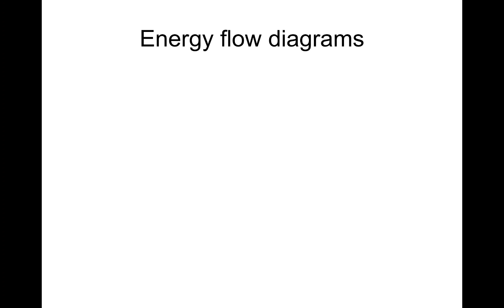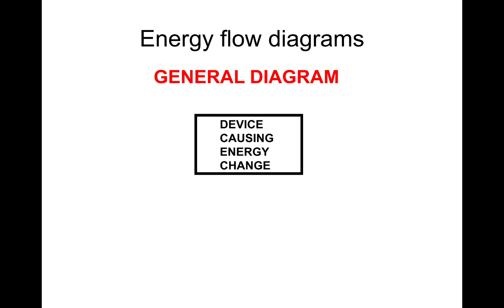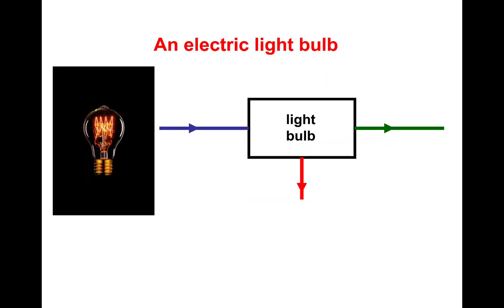And there's your flow diagrams. So we're going to do a few questions now. You've got some kind of input energy, you've got a device causing energy change. To the right, we're going to have useful output energy. At the bottom, we're going to have wasted energy. This will make sense when we do some examples. So first one, an electric light bulb. What goes into an electric light bulb? Electrical energy. What's useful? We want light energy. And what energy do they waste? Heat energy.